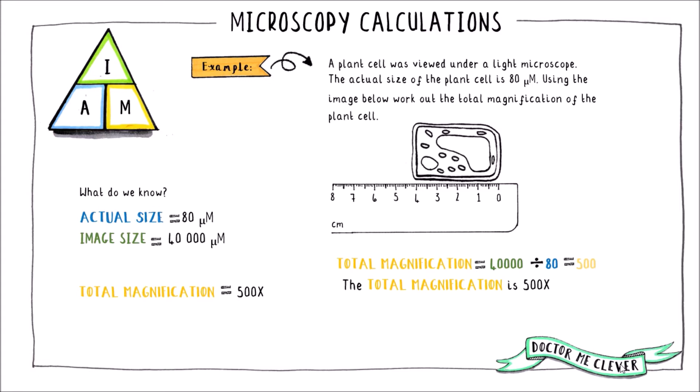If you're given a question that asks you to work out the actual size of a specimen and all you're given in the question is the total magnification along with the image, you'll need to measure the image to get the image size and then rearrange the IAM equation so that actual size equals image size divided by total magnification, and then plug your numbers in.